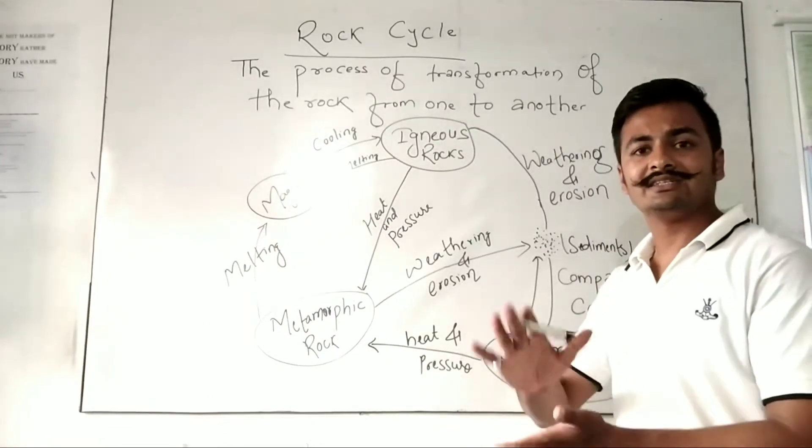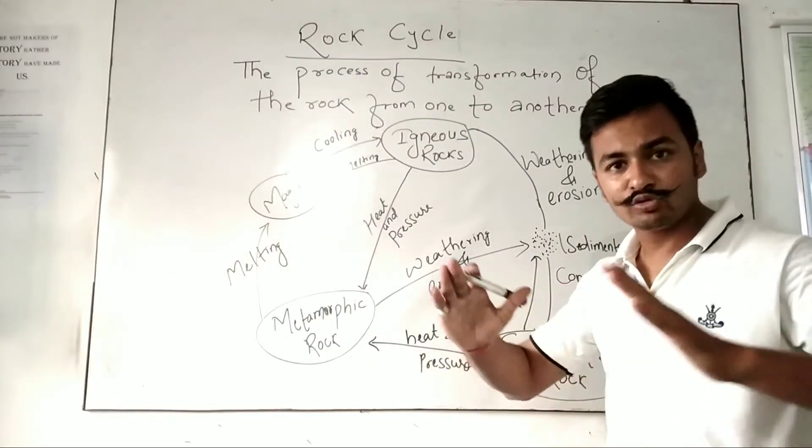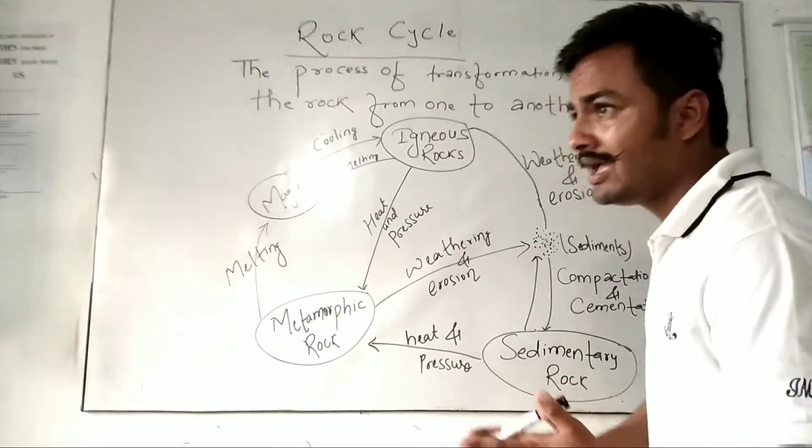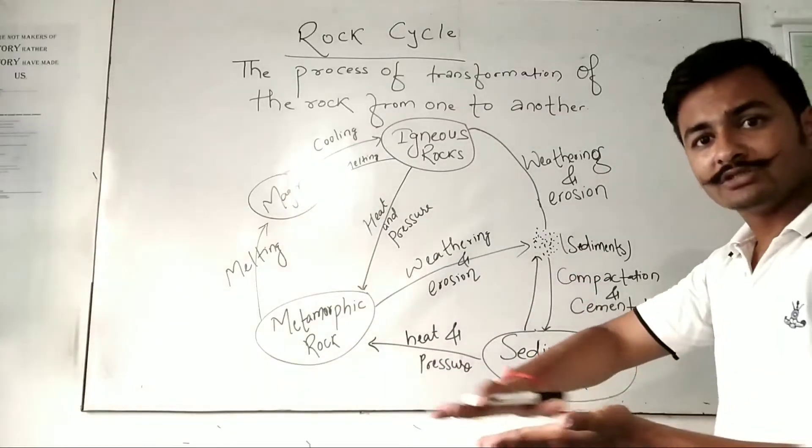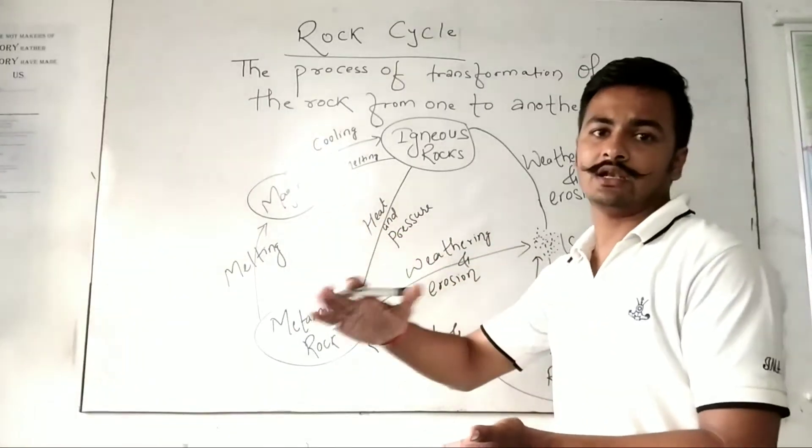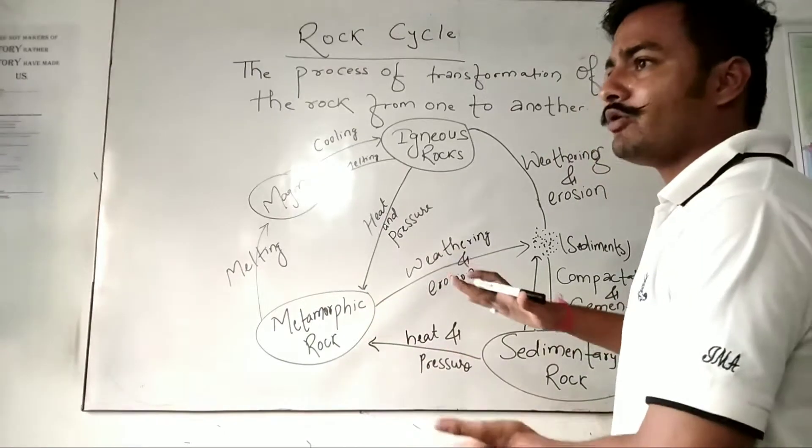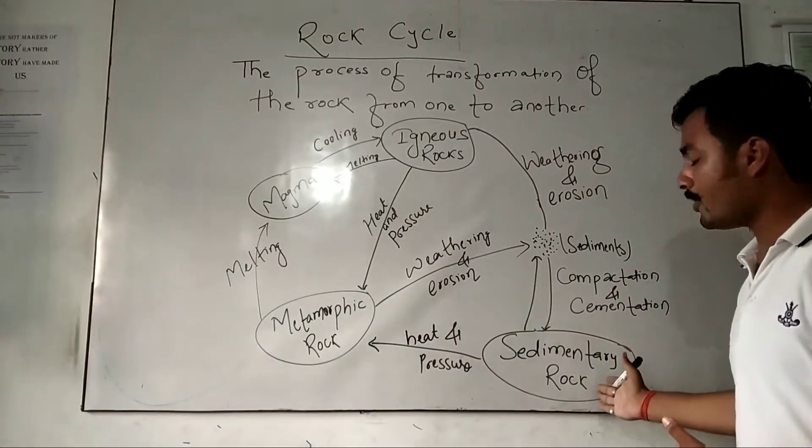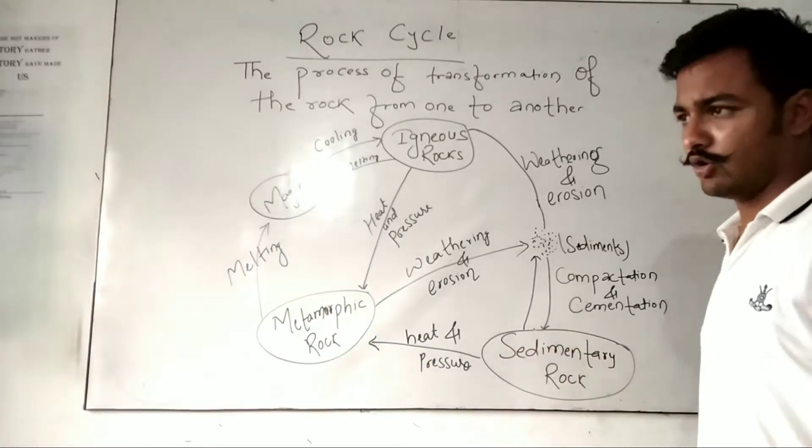And there is a deposit over another layer-wise, they get deposited over another layer-wise. The rock formed is known as sedimentary rock.